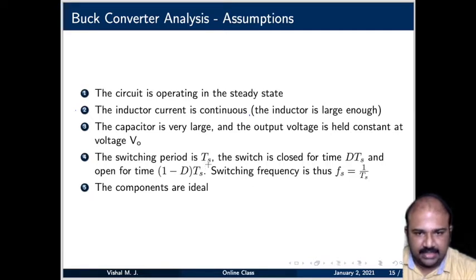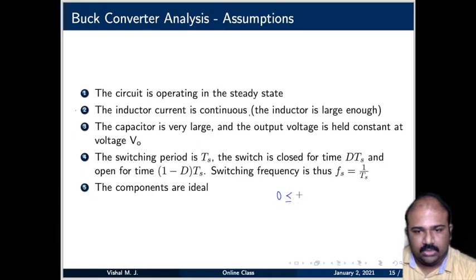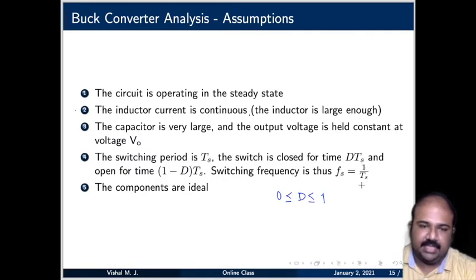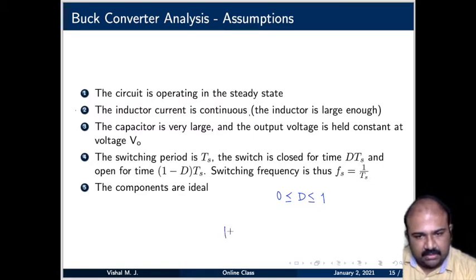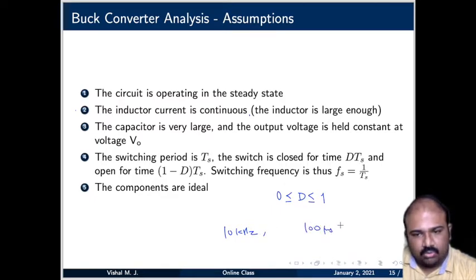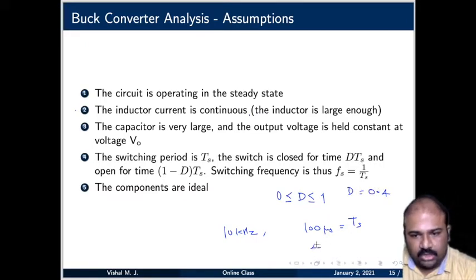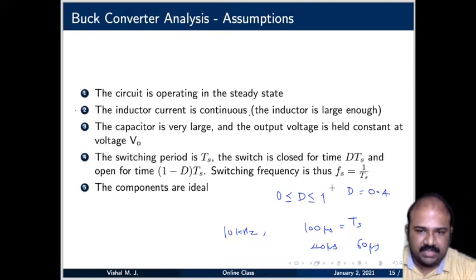The switching period is Ts. The switch is closed for a time dTs, where d is the duty ratio, and open for (1−d)Ts, with 0 ≤ d ≤ 1. Switching frequency is 1/Ts. For example, if switching frequency is 10 kHz, then one switching cycle is 100 microseconds. If duty ratio d = 0.4, the switch is on for 40 microseconds and off for the remaining 60 microseconds.